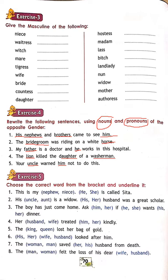After that, exercise 5 says: choose the correct word from the bracket and underline it. Example: 'This is my niece — she is called Sita.' Based on the noun 'niece' which is female, you choose 'she'. His aunt is a widow — her husband was a great scholar. Based on the word 'husband' you know this noun is female.